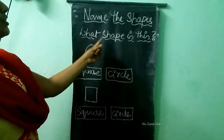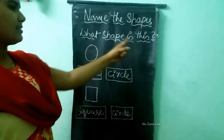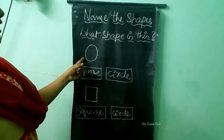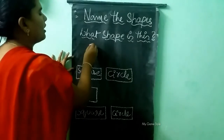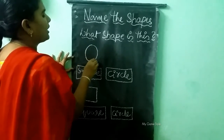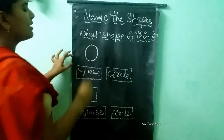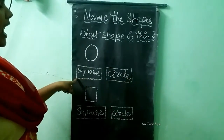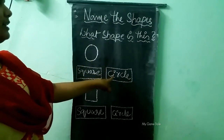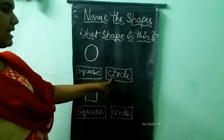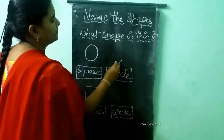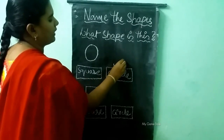What shape is this, children? What is this shape? Is it a square or circle? Circle! Here it is a circle. So we need to tick the right answer — circle.